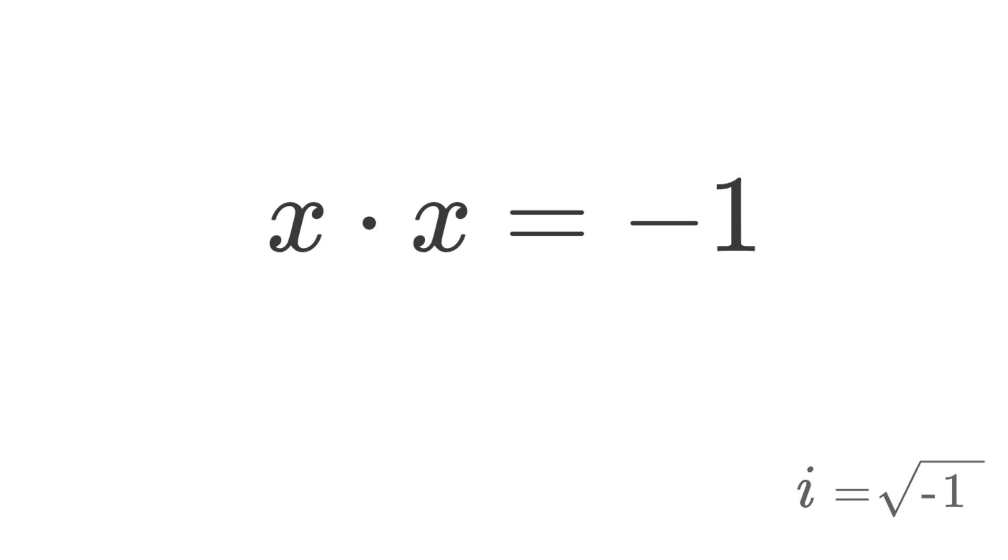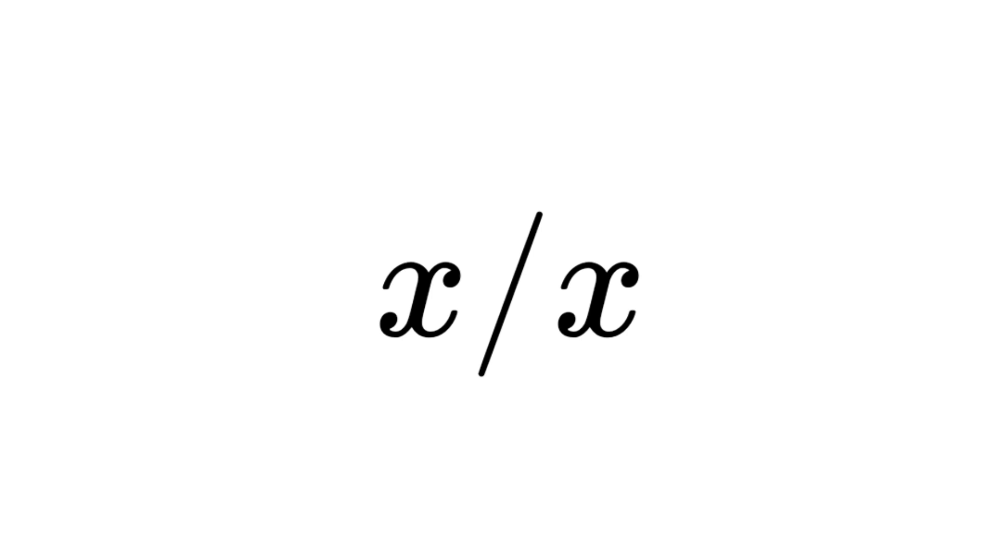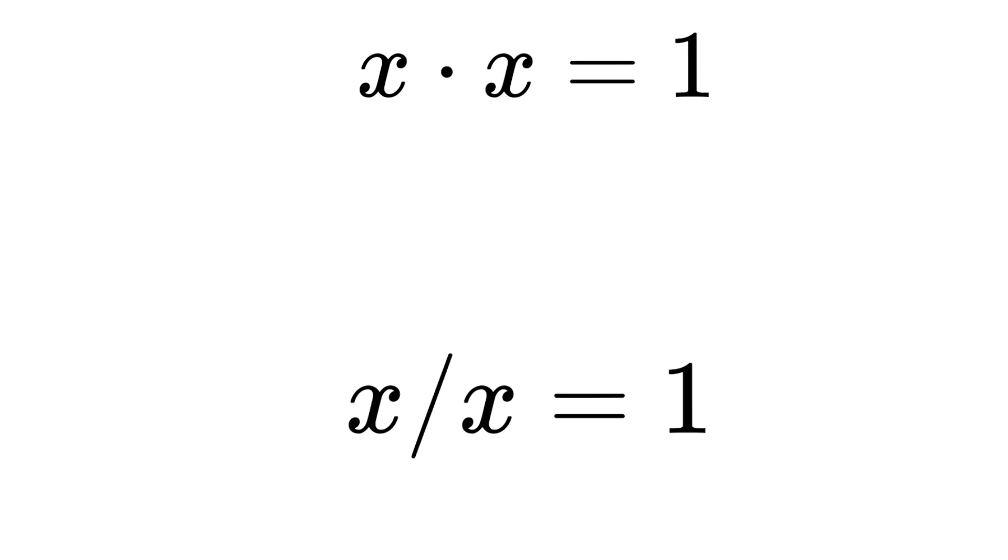In transitioning from real to complex numbers, there's another equation we may have overlooked, the form x divided by x. We primarily focused on solving the x times x equation. For both real and complex numbers, these equations, x times x equals one and x divided by x equals one, have solutions.